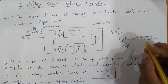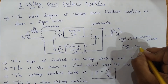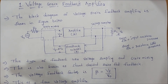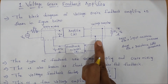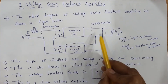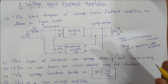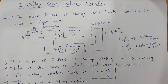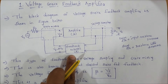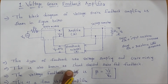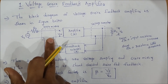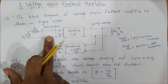For shunt feedback, output resistance increases. Voltage feedback decreases the output resistance, and current feedback increases the output resistance. Voltage feedback — output resistance decreases; current feedback — output resistance increases. Cascade amplifiers allow high input resistance and low output resistance. This is the voltage series feedback amplifier where input resistance increases.